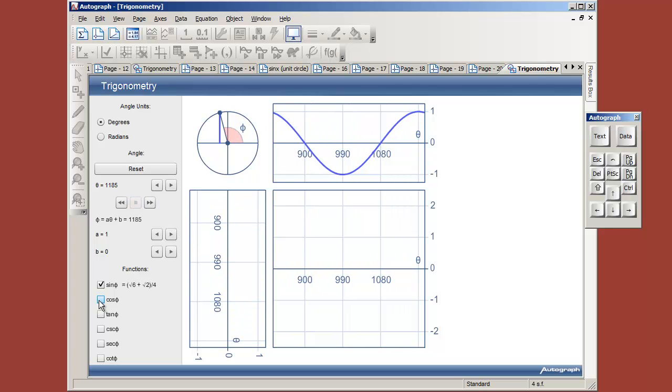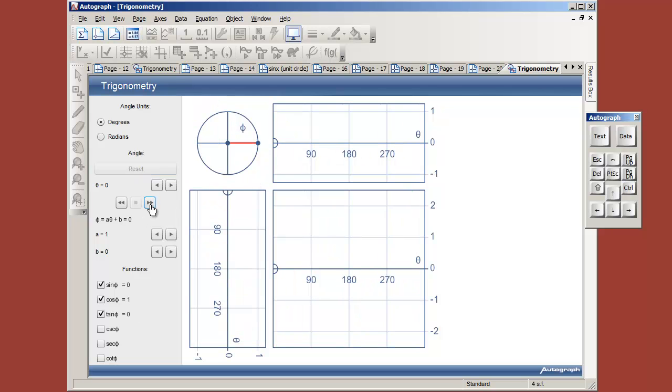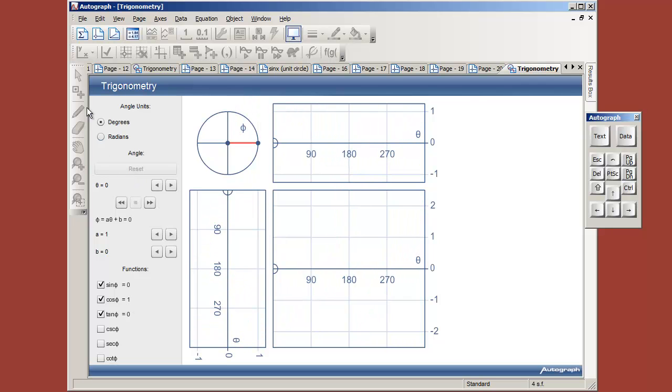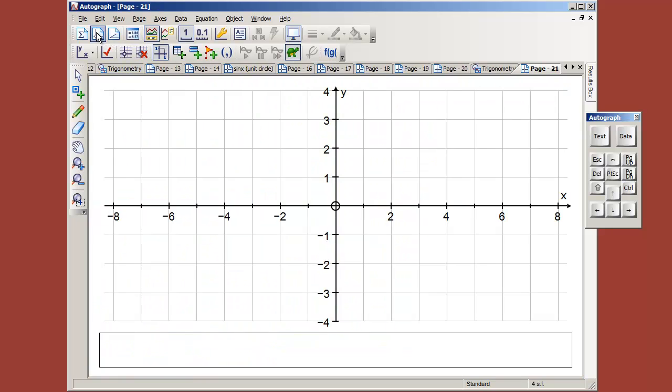And you can do the same for cosine and for tan. Now tan is a slightly different one because you notice that sine and cosine need 360 degrees to complete their cycle, whereas tan is all finished at 180 and it repeats. So how does that work? Let's see if we can come back to this now and open a new page. Let's have a look at the relationship between the tan function and gradient.